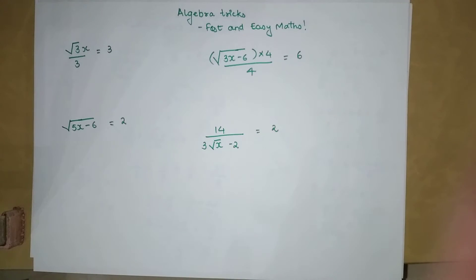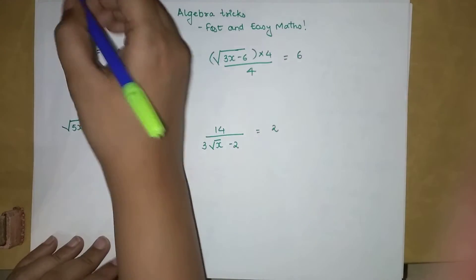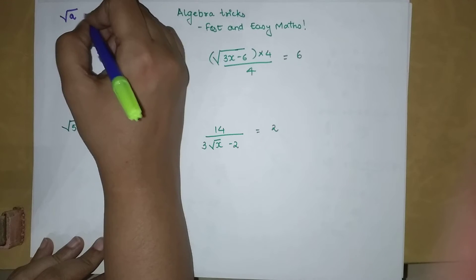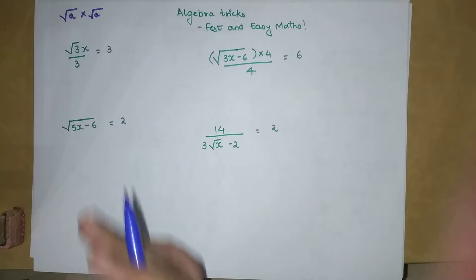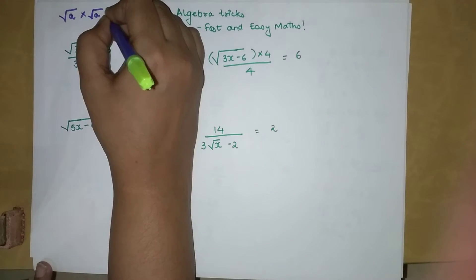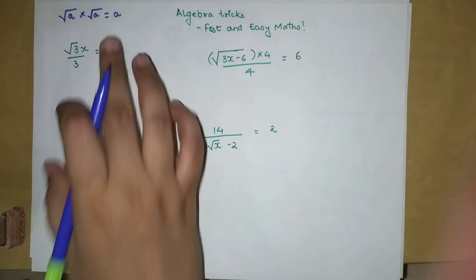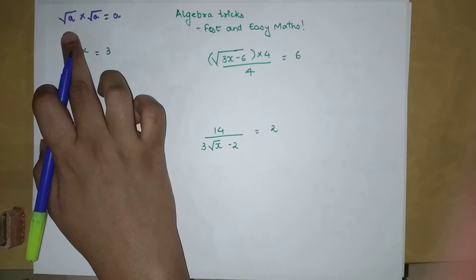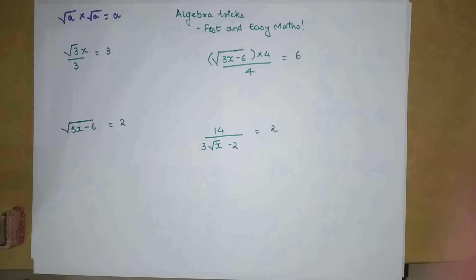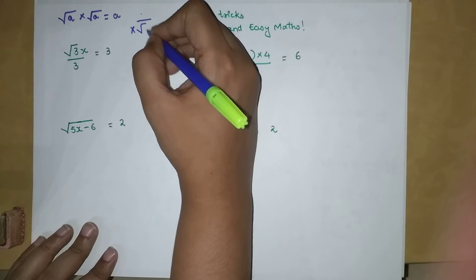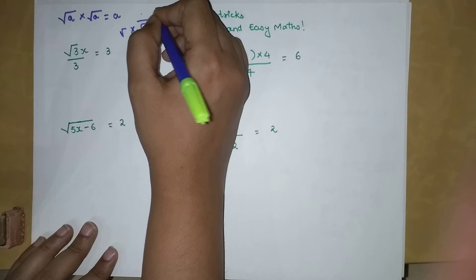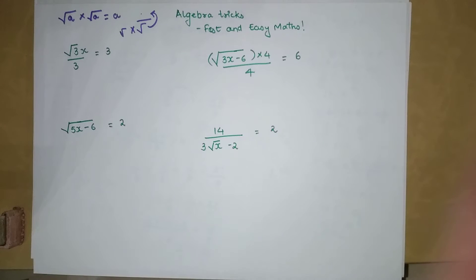Before beginning, one very important thing to remember: when you have a root of any number or variable, root of a multiplied by root of a equals a — and vice versa. Also important: in mathematics we never leave roots in the denominator. When that happens, you multiply by the conjugate to shift the root into the numerator.